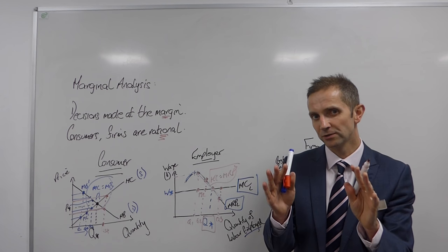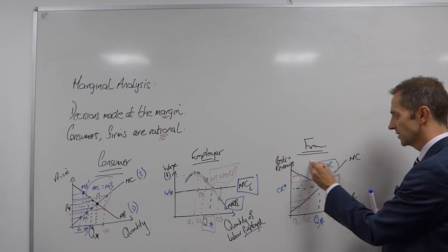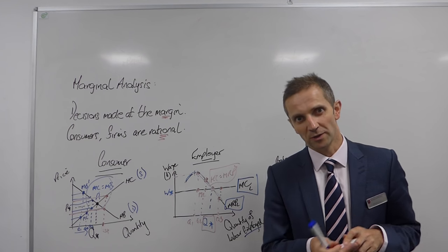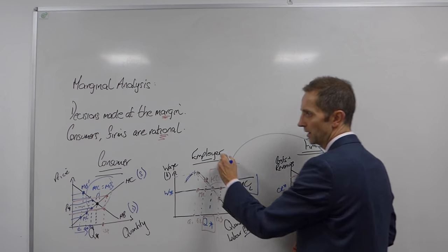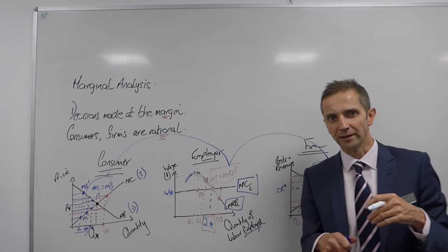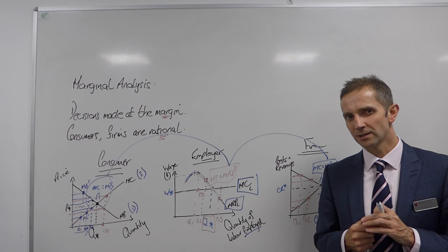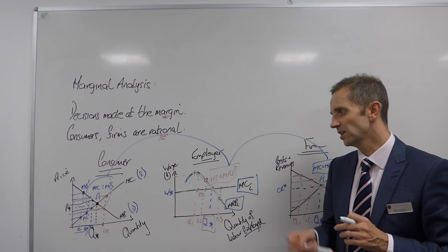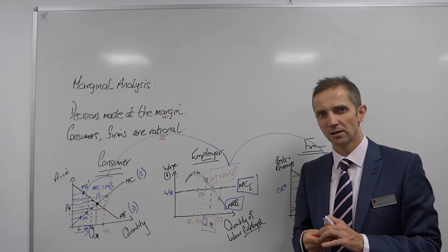Therefore, from the rational firm's point of view, the optimum position to be is MC equals MR. And, ladies and gentlemen, I hope you note the trend here. MC equals MR, MC equals MRP, MC equals marginal benefit. And this is fundamental, particularly when we look at market structures next year. This whole idea of decisions being made at the margin. This whole notion of marginal analysis.